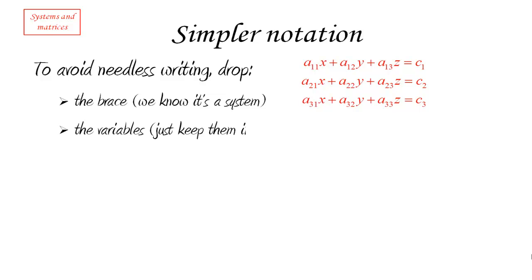Secondly, we don't need to actually write down the variables. All we need to do is remember that they are there. The x's all in the first place corresponding to the a1 whatever, the y corresponds to the other coefficients, and the z corresponds to the other coefficients. So as long as we remember to keep the coefficients in order, then we can drop the variables.